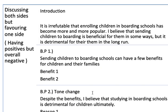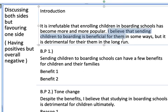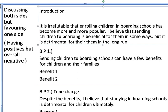The second way to handle is discussing both sides but favouring one side — for example, having some positives but being overall negative. Introduction: 'It is irrefutable that enrolling children in boarding schools has become more and more popular. I believe that sending children to boarding school is beneficial for them in some ways, but it is detrimental for them in the long run.' Using the words 'beneficial' and 'detrimental' implies positive in some ways but generally negative — completely implying what I want to say in this essay.